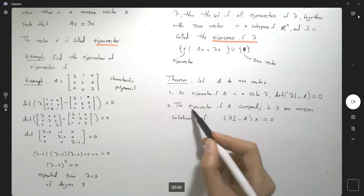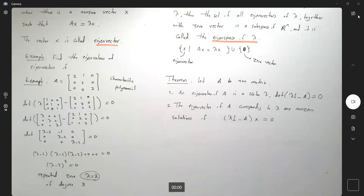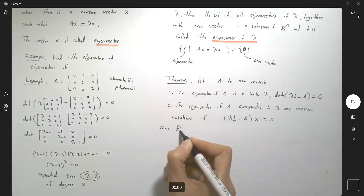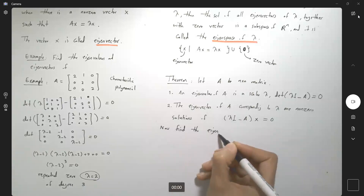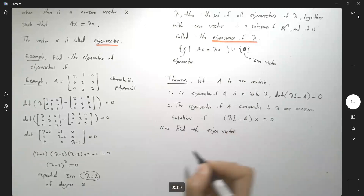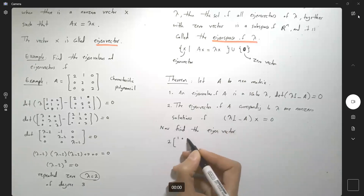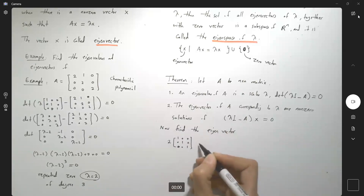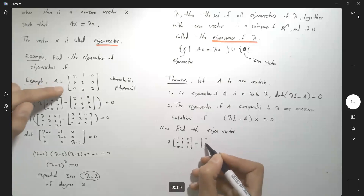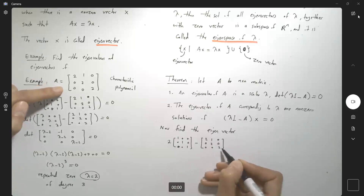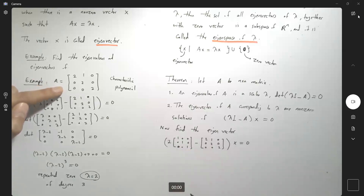Now let's find the eigenvector corresponding to lambda equals 2. To find the eigenvector, you have lambda times I — that is 2 times the identity matrix — minus matrix A, which is 2, 0, 0; 1, 2, 0; 0, 0, 2 — times vector x equal to 0. We are basically solving this equation.